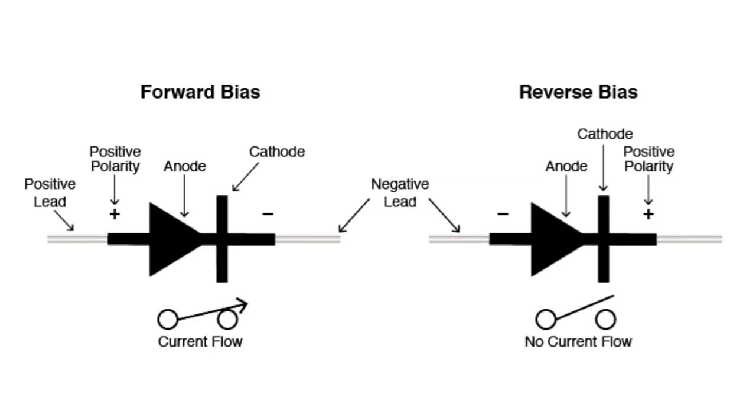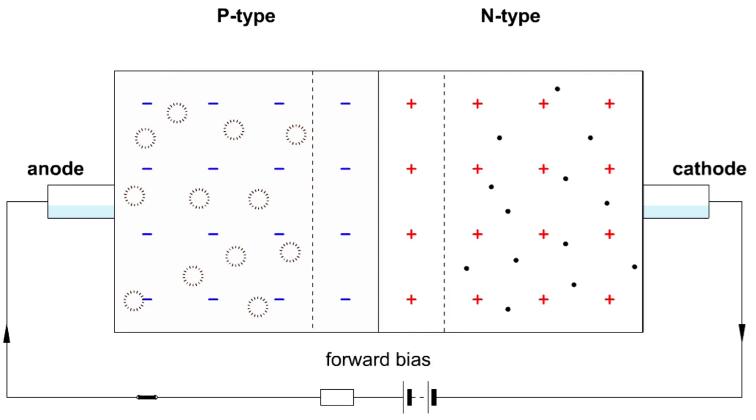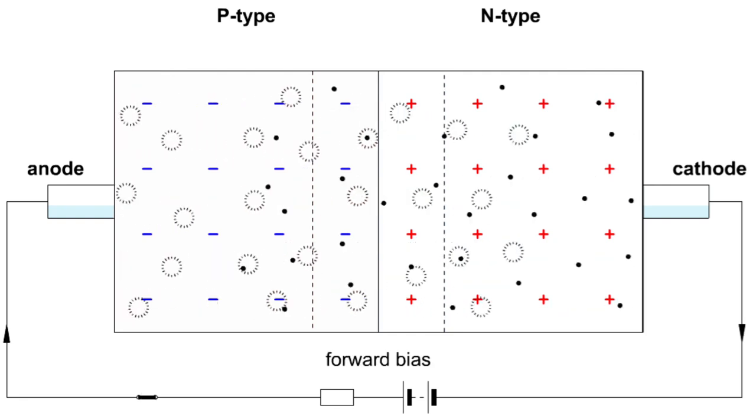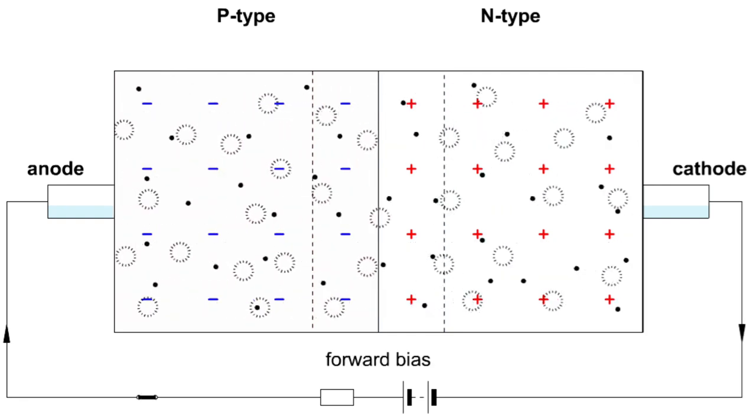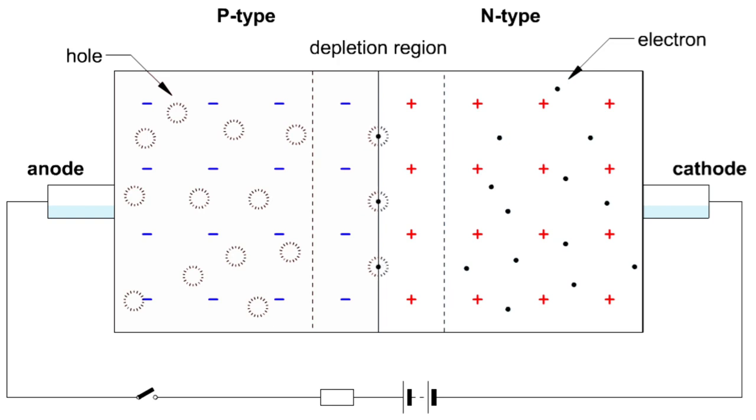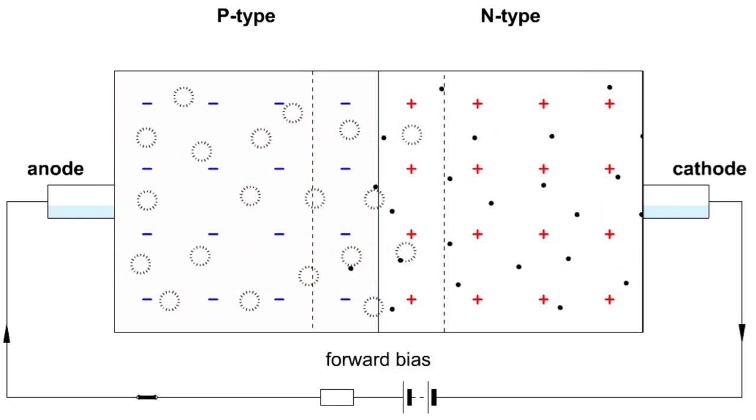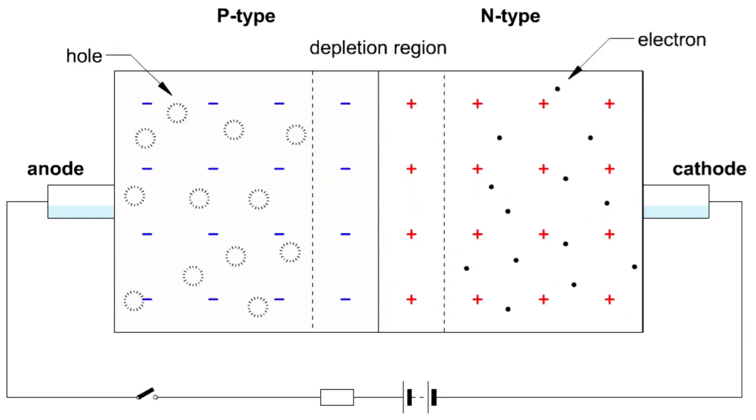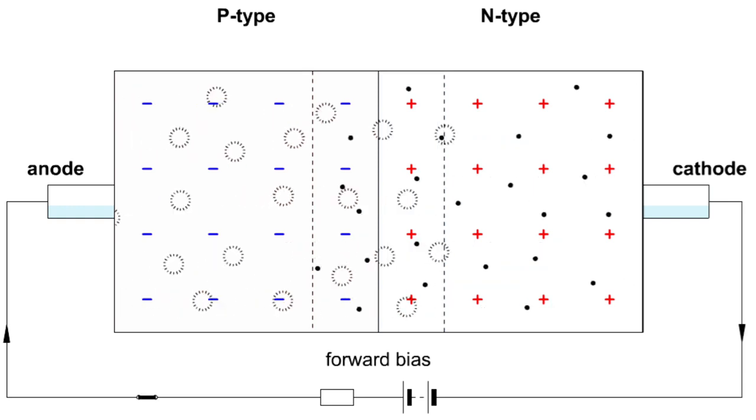In forward bias operation, when a diode is forward biased, the external voltage reduces the potential barrier across the junction. This reduction in barrier potential allows majority charge carriers - electrons in n-type and holes in p-type - to easily move across the junction.